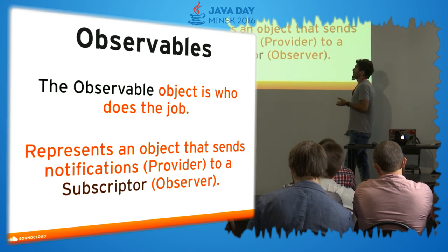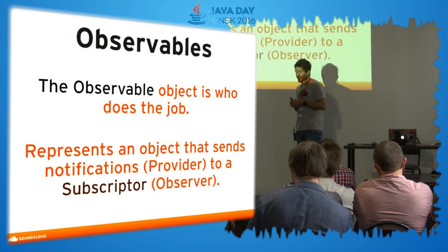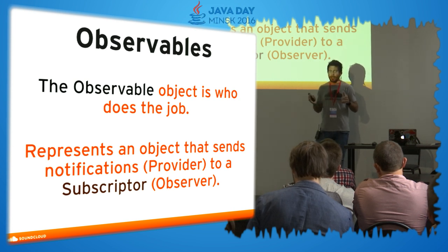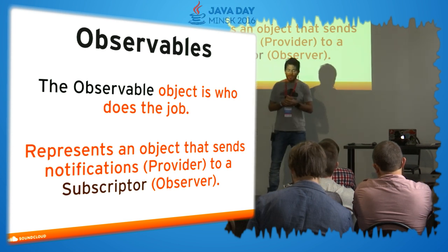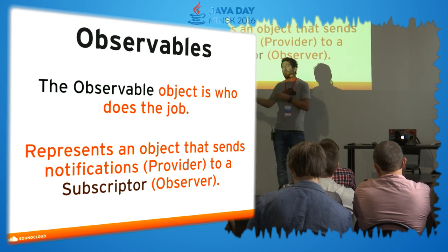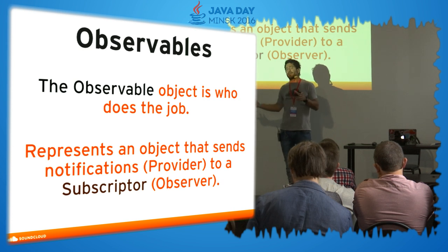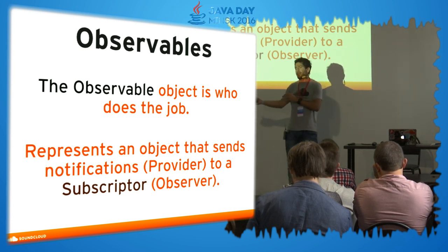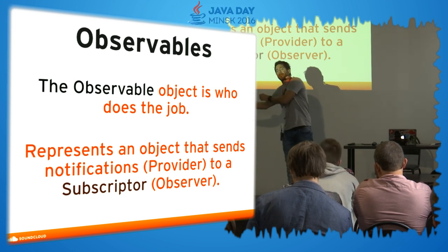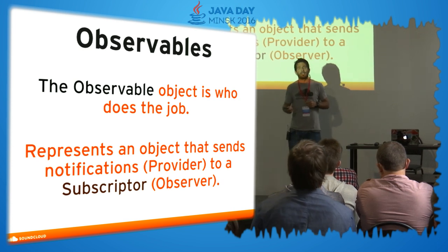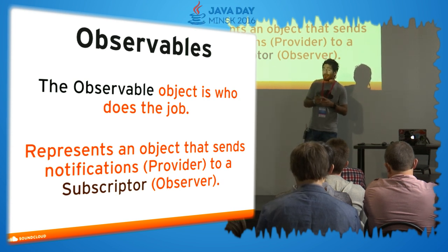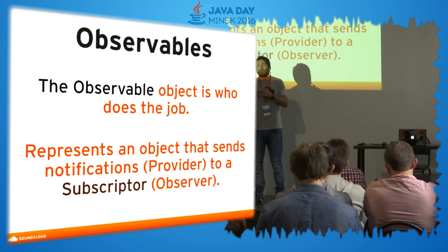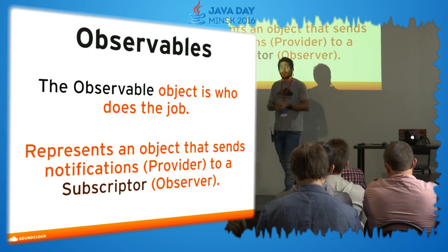Let's start with observables — I think this is the main concept of RxJava. Something I wanted to point out is the difference between reactive programming and imperative programming. In imperative programming we use a polling mode: a producer produces data, a consumer consumes it by polling. In reactive programming, the producer executes a task and emits something, and the consumer just waits — it's more of a push model. That simplifies multi-threading a lot.